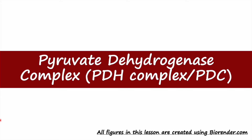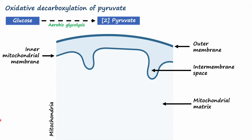In this lesson we are going to learn about pyruvate dehydrogenase complex, also known as PDH complex or PDC. As mentioned in my previous lesson on glycolysis, during aerobic glycolysis glucose is broken down into two molecules of pyruvate. Pyruvate is the end product of glycolysis and it must be transported into mitochondria before it can enter the TCA cycle.